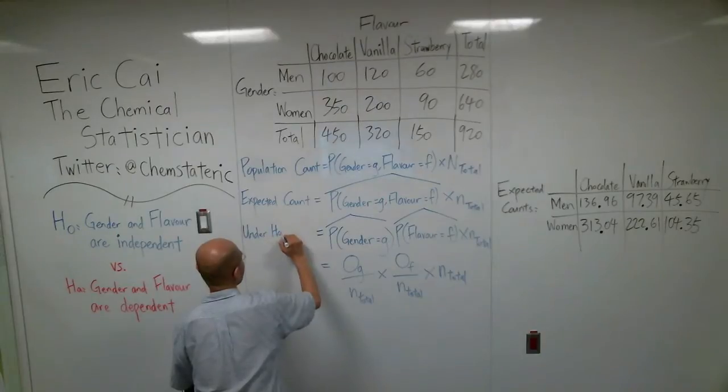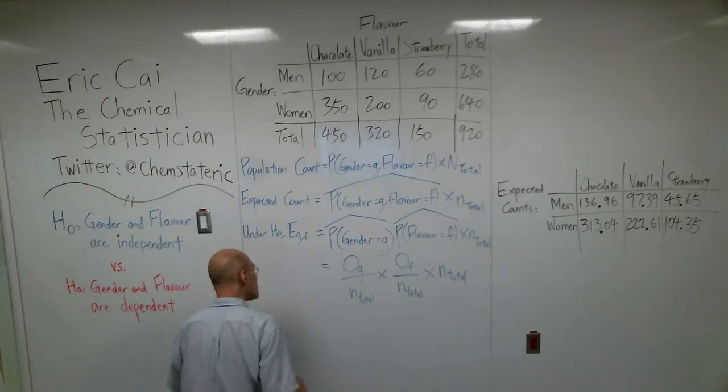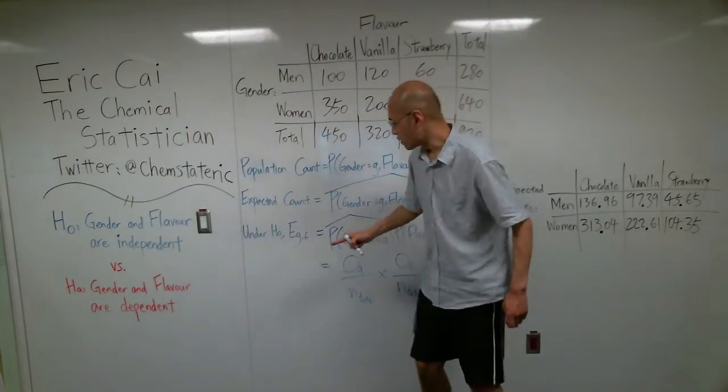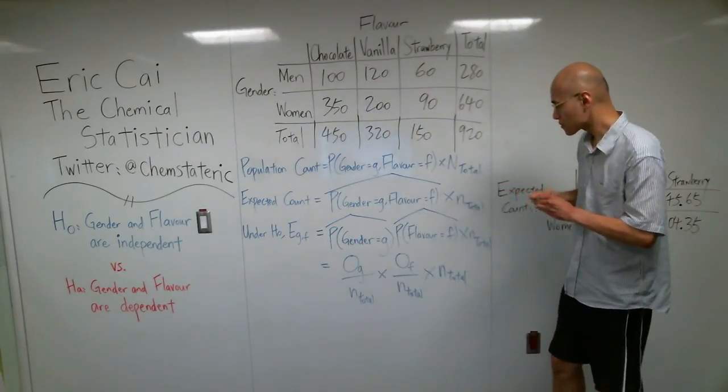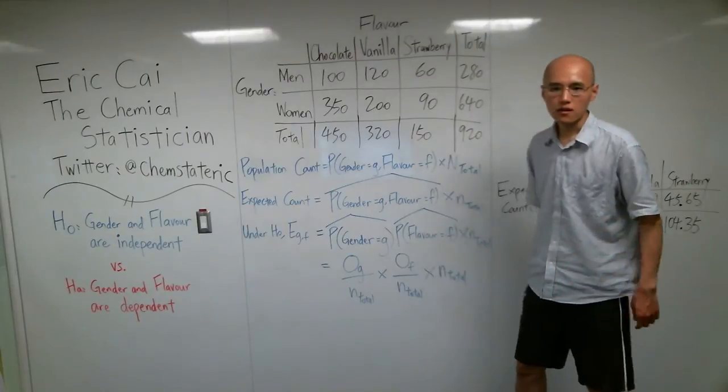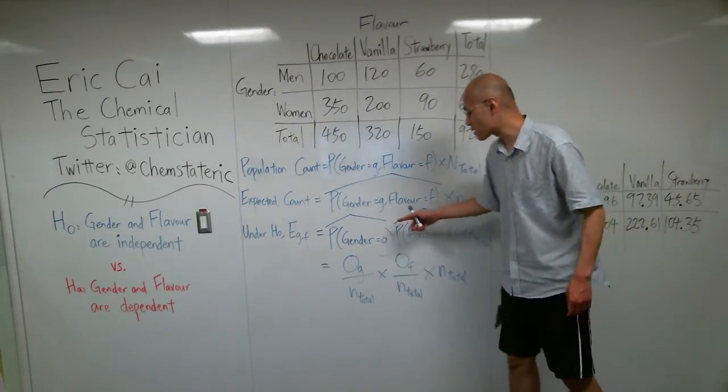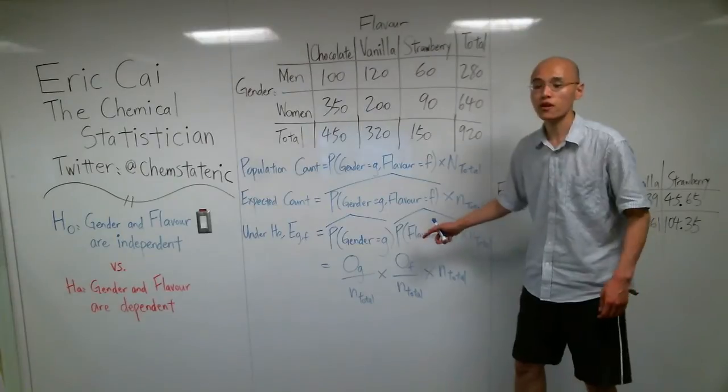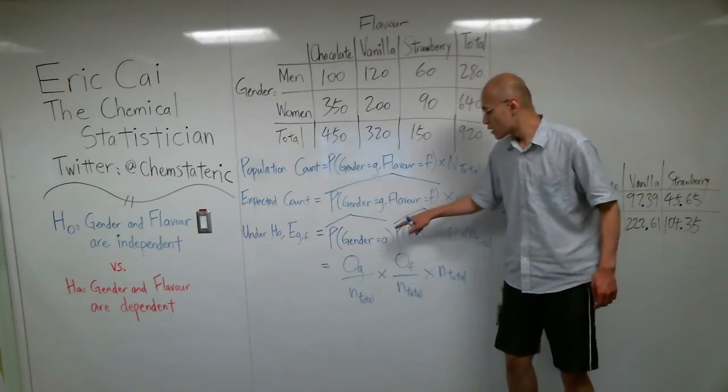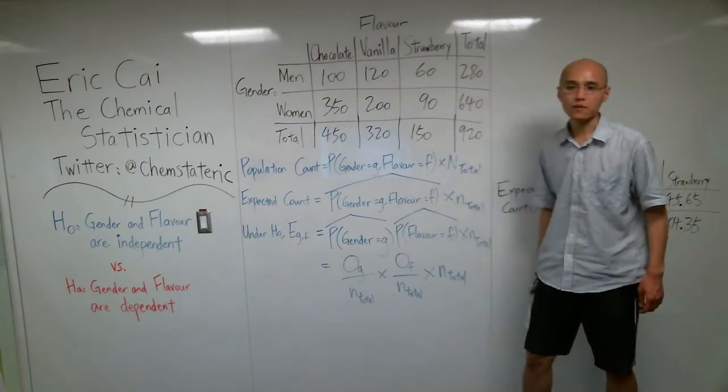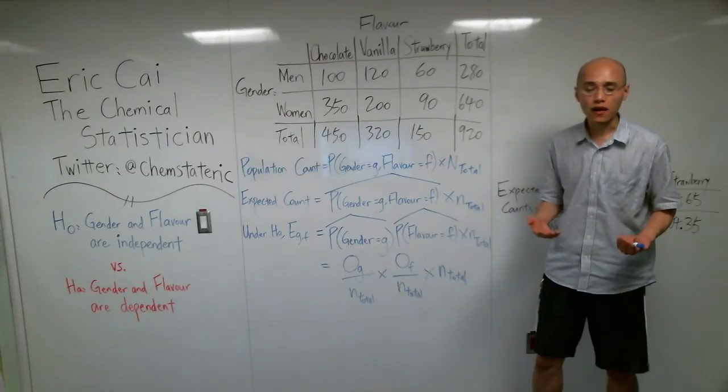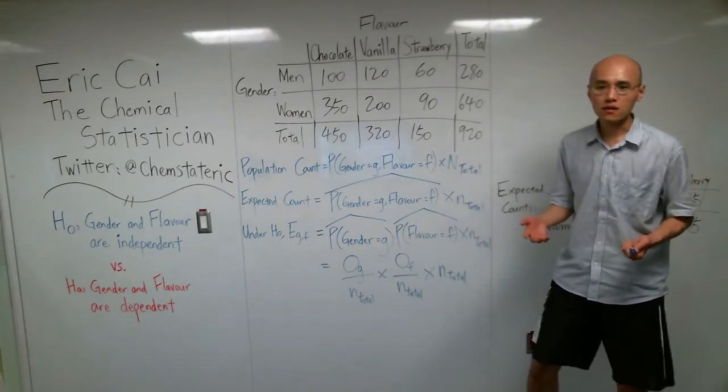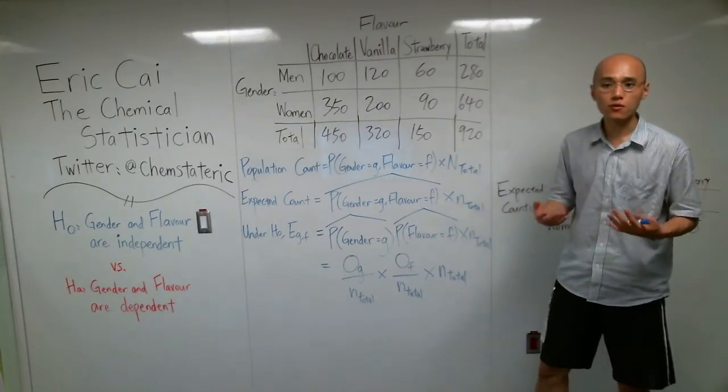Under H0, the expected count for these two particular values of gender and flavor, this joint distribution is just the product of the marginal distributions. Or sorry, this joint probability is equal to the product of the marginal probabilities. That's the definition of independence for probability. The joint probability is equal to the product of the marginal probabilities.